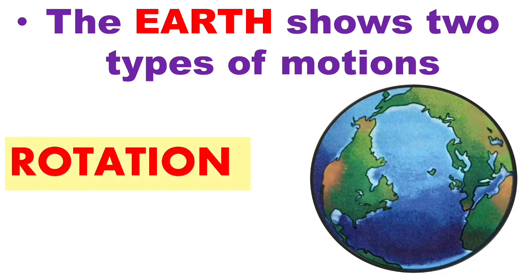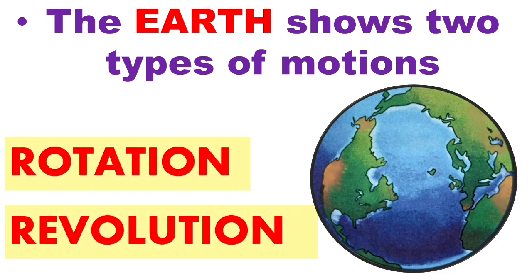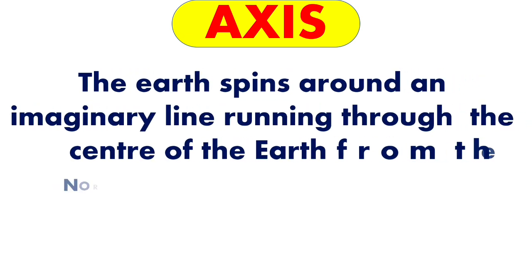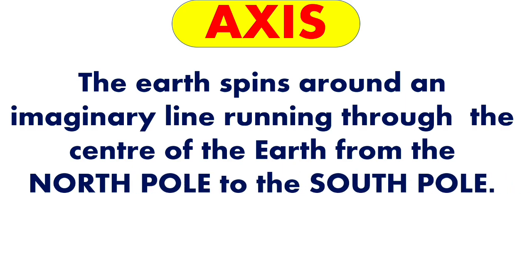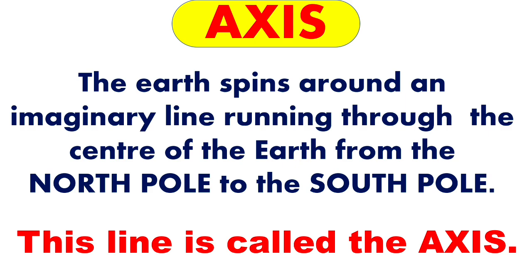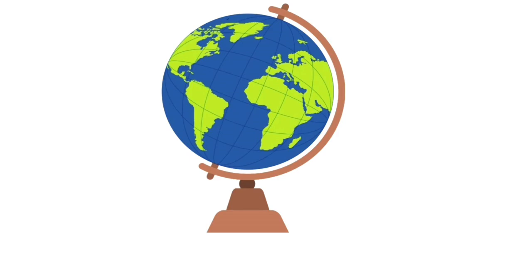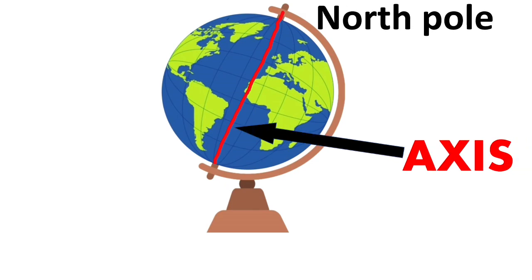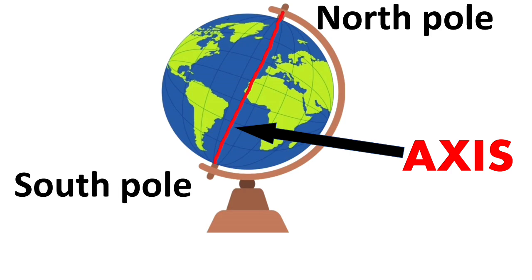The two types of motions are namely rotation and revolution. First, we have to understand about the earth's axis. The earth spins around an imaginary line running through the center of the earth from the north pole to the south pole. This imaginary line is called the axis. A globe is the model of the earth, and this imaginary line known as the axis runs from the north pole to the south pole.